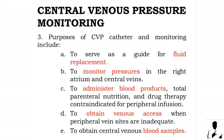Purposes of the central venous pressure catheter and monitoring include: to serve as a guide for fluid replacement, to monitor pressures in the right atrium and central veins, to administer blood products, total parenteral nutrition, and drug therapy contraindicated for peripheral infusion, to obtain venous access when peripheral vein sites are inadequate, and to obtain central venous blood samples.